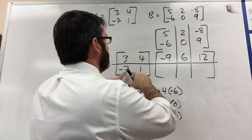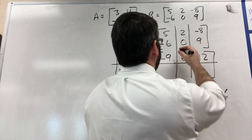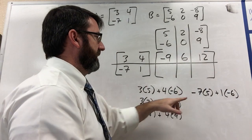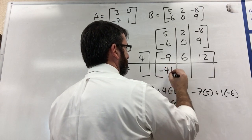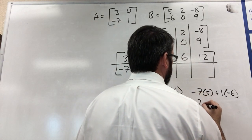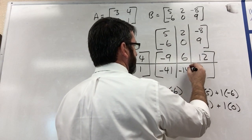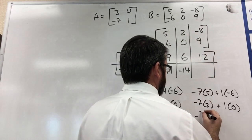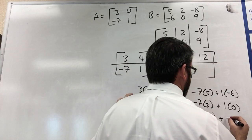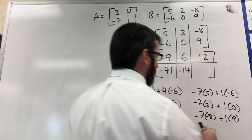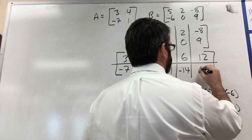And then for this entry, negative 7 times 5 plus 1 times negative 6, that's going to be negative 41. Negative 7 times 2 plus 1 times 0, that's going to be negative 14. And negative 7 times negative 8 is positive 56 plus 9 is positive 65.